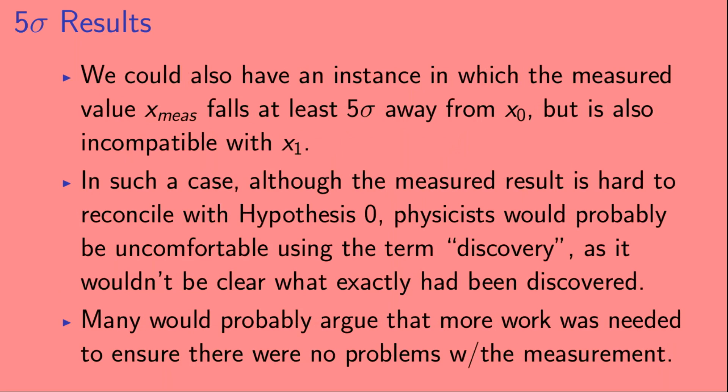We could also have an instance in which the measured value, x_meas, falls at least 5 sigma away from x0, but is also incompatible with x1. In such a case, although the measured result is hard to reconcile with hypothesis 0, physicists would probably be uncomfortable using the term discovery, as it wouldn't be clear what exactly had been discovered. Many would probably argue that more work was needed to ensure there were no problems with the measurement.